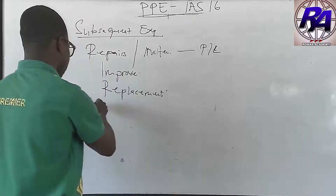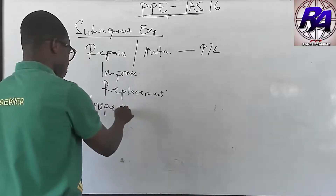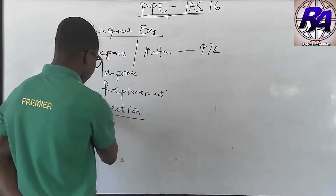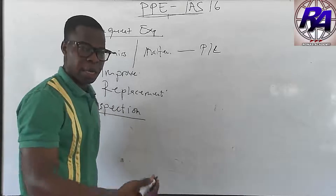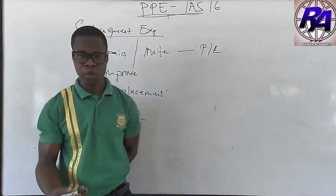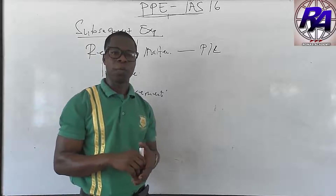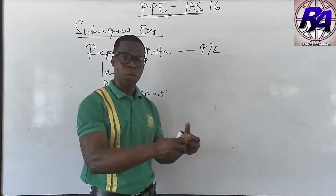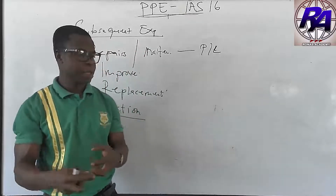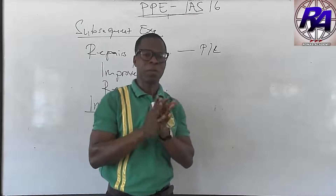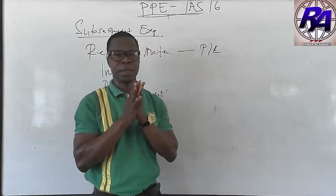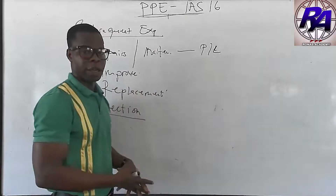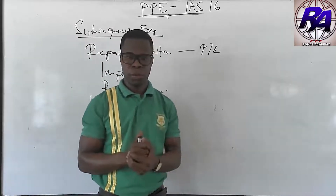Another issue concerns inspection costs. If it is required by law that an entity must carry out periodic inspections of an asset, then the cost of inspecting that asset should be capitalized as part of the cost of the asset. Please always remember that.